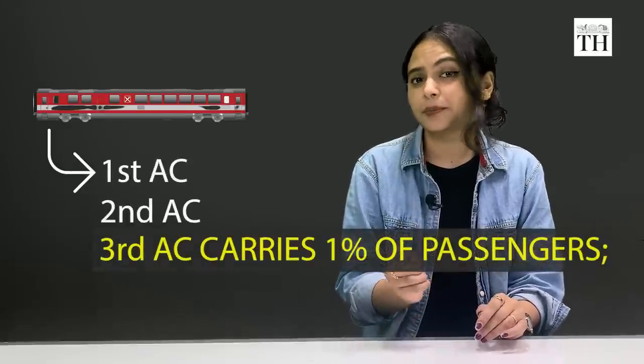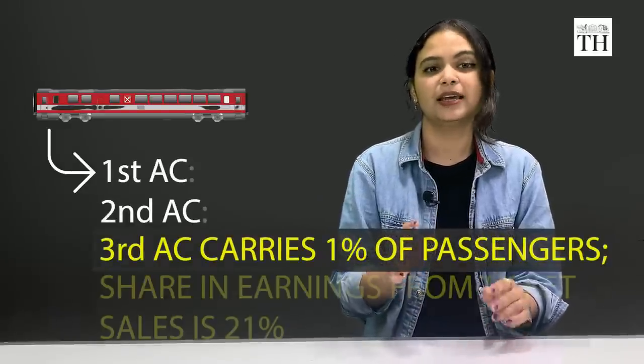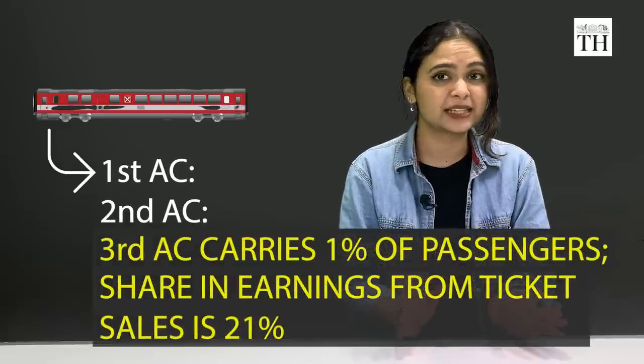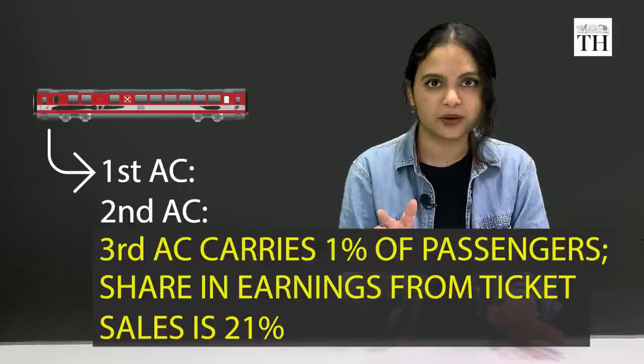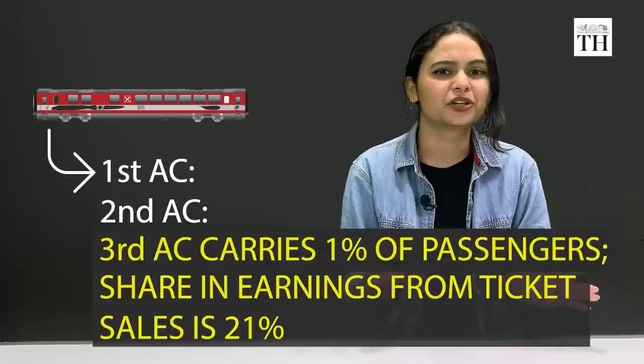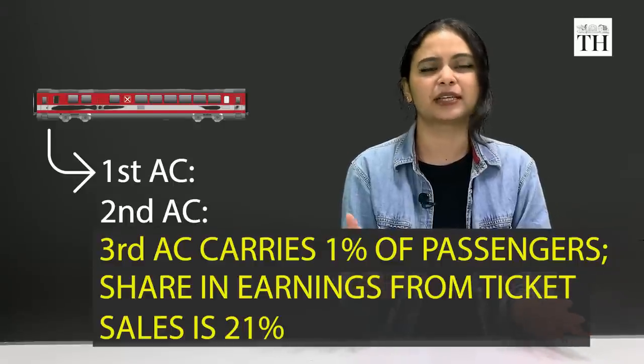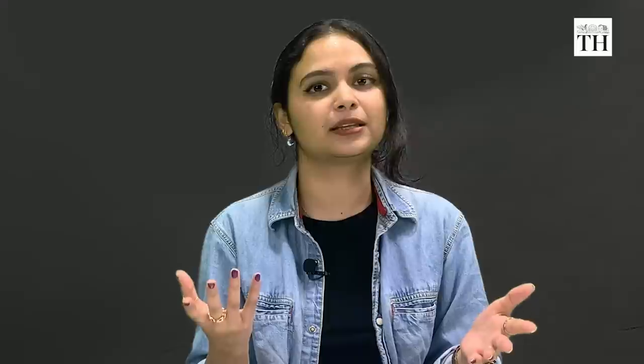However, in both cases, the share of passengers and passenger kilometers remain very low in the AC coaches compared to the other classes. Here's where the story switches lanes. While third AC carries just 1% of passengers, its share in earnings from ticket sales is 21%. That's huge. No other class of train travel carries so few passengers and manages to bring in that much money.